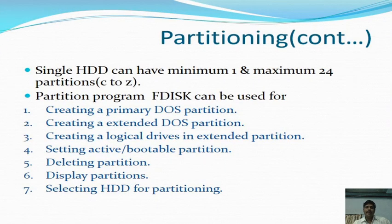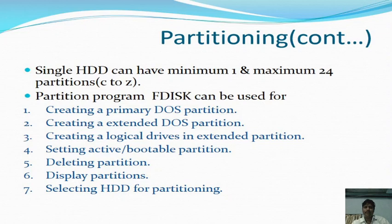A single hard disk drive can have a minimum of 1 and a maximum of 24 partitions, with drive letters starting from C to Z, because A and B are always reserved for the floppy disk drive. The partitioning program FDisk can be used for: creating a primary DOS partition, creating an extended DOS partition, creating logical drives in the extended partition, setting the active bootable partition, deleting a partition, displaying partitions, and selecting a hard disk drive for partitioning.